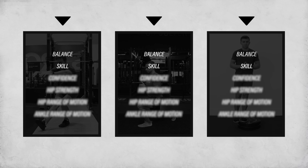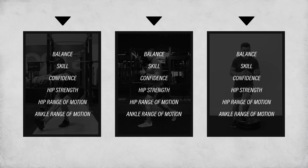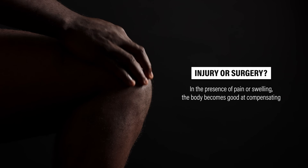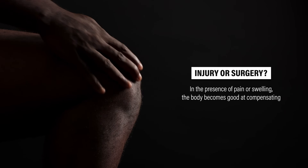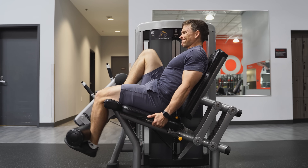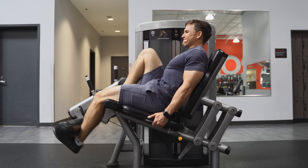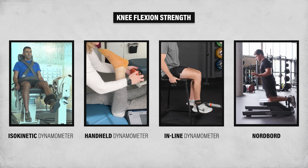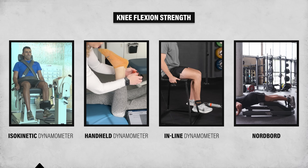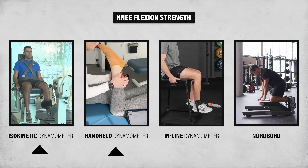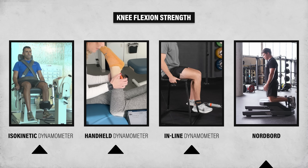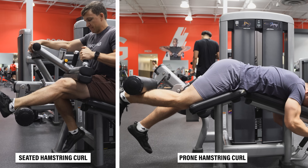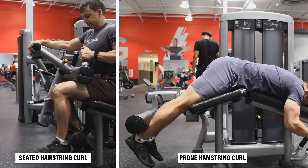Examples include balance, skill, confidence, and the strength and range of motion of multiple joints. Also, in the presence of pain or swelling, such as after an injury or surgery, the body becomes good at compensating. It's hard to cheat leg extensions, and if a deficit is present, it'll carry over to those other movements as well as running and jumping. Physical therapists can assess knee flexion strength with the use of an isokinetic dynamometer, handheld dynamometer, inline dynamometer, Nordboard, or similar device. The best way to test knee flexion strength on your own is with the use of a seated or prone hamstring curl machine.